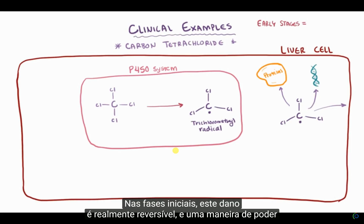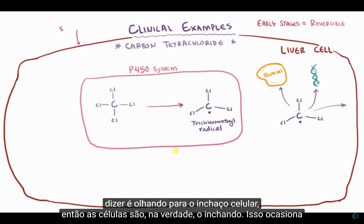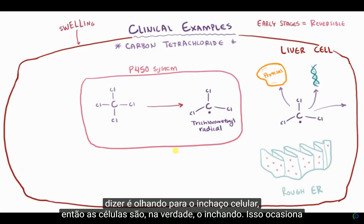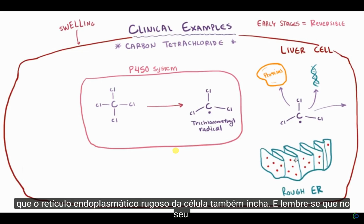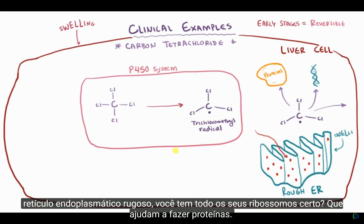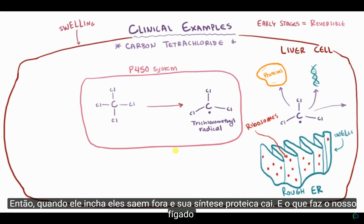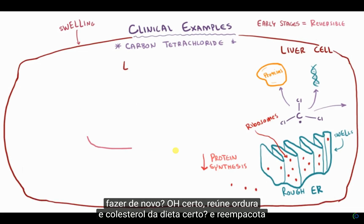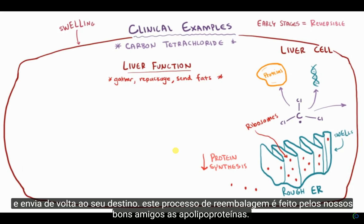In the early stages, though, this damage is actually reversible, and one way you can tell is by looking for cellular swelling. The cells are actually swelling, and this causes the rough endoplasmic reticulum of the cell to also swell. Remember that on your rough endoplasmic reticulum you've got all your ribosomes, which help us make proteins. So when it swells, the ribosomes pop off and your protein synthesis goes down. And what does the liver do? It gathers up fat and cholesterol from the diet, repackages it, and sends it back on its way. This repackaging process is done by the apolipoproteins.